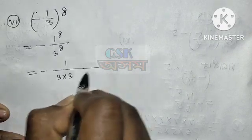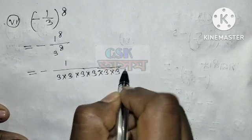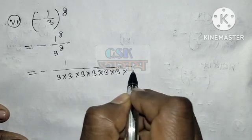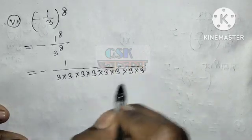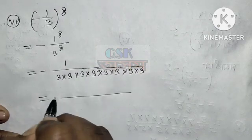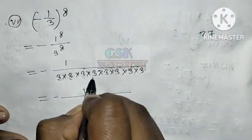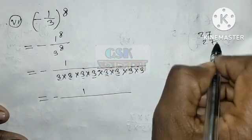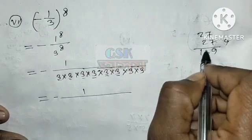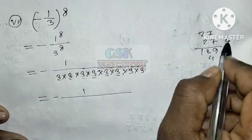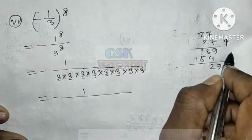Eight factors of 3: 3 into 3, 3 into 3, 3 into 3, 3 into 3 — counting 1, 2, 3, 4, 5, 6, 7, 8. Then minus 3 into 3, 1, 2, 3, 4, 5, 6, 7, 8. The value works out to 6561. This is the value.